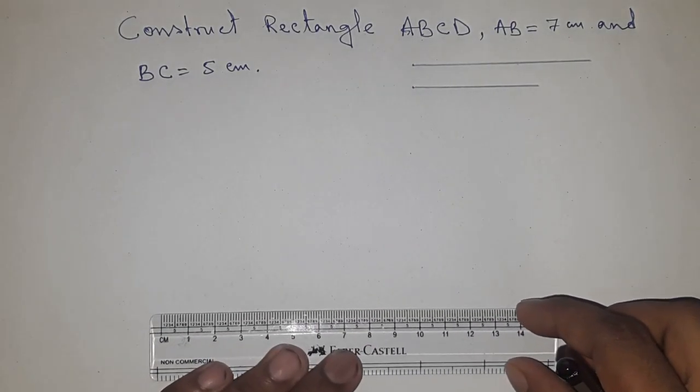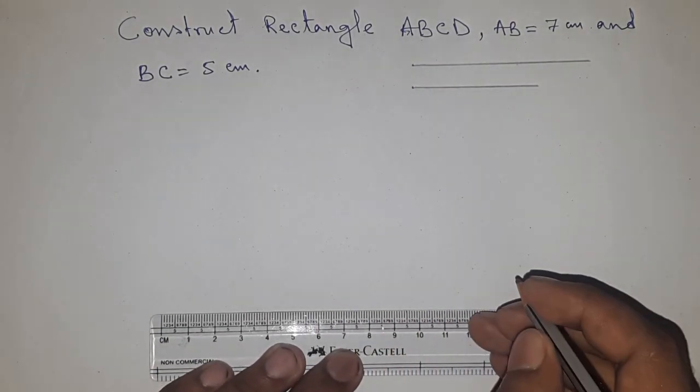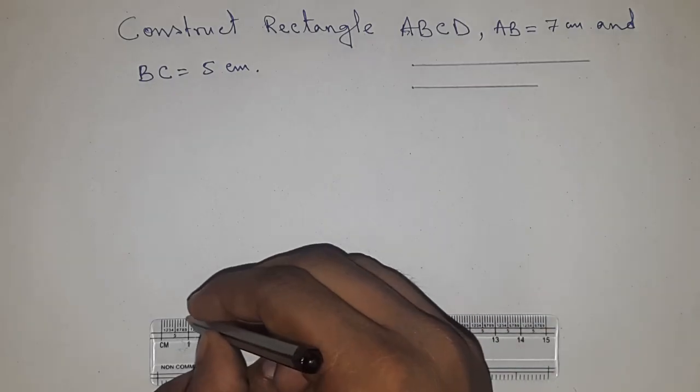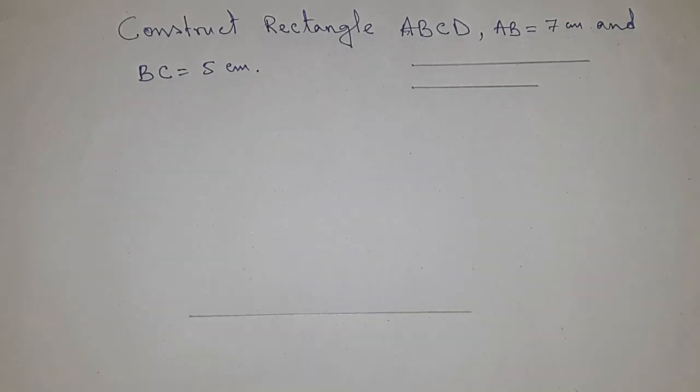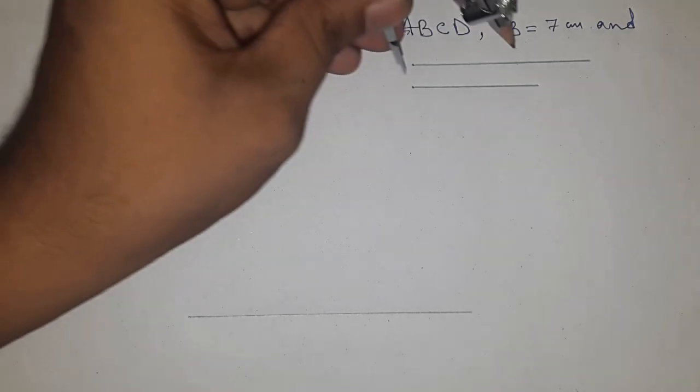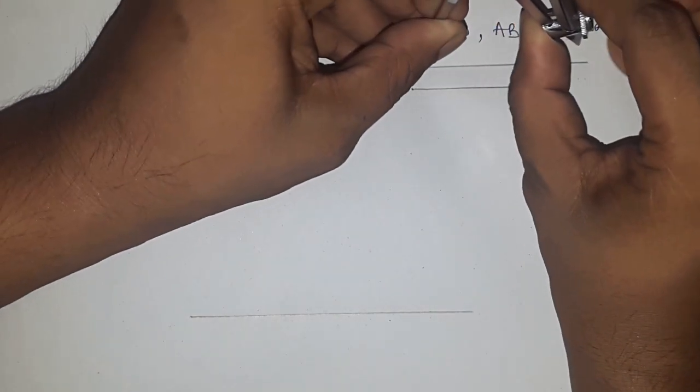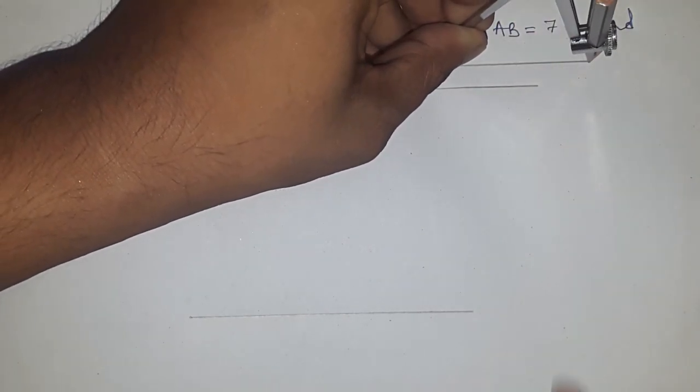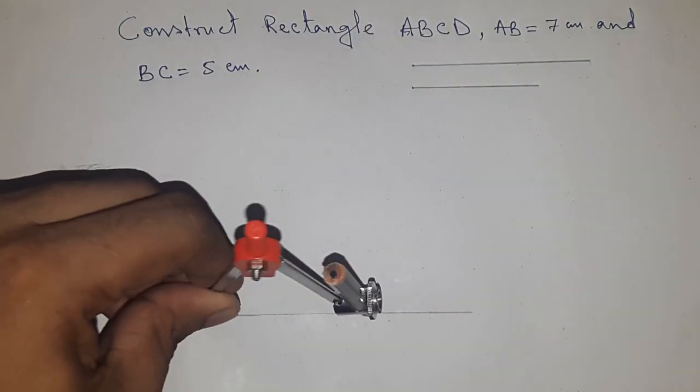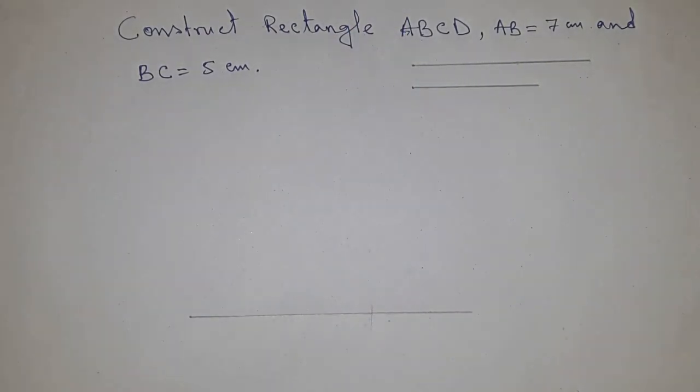Now draw a line of any length. Next, take the length of line AB with the compass, put the compass here, and cut the line.